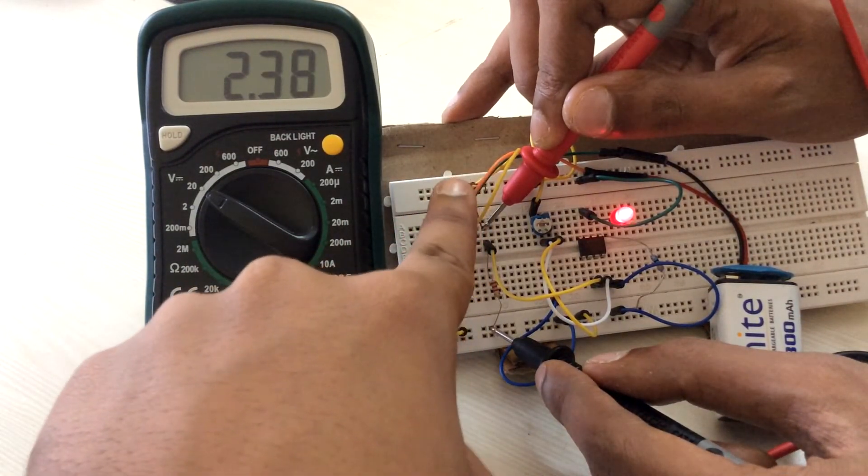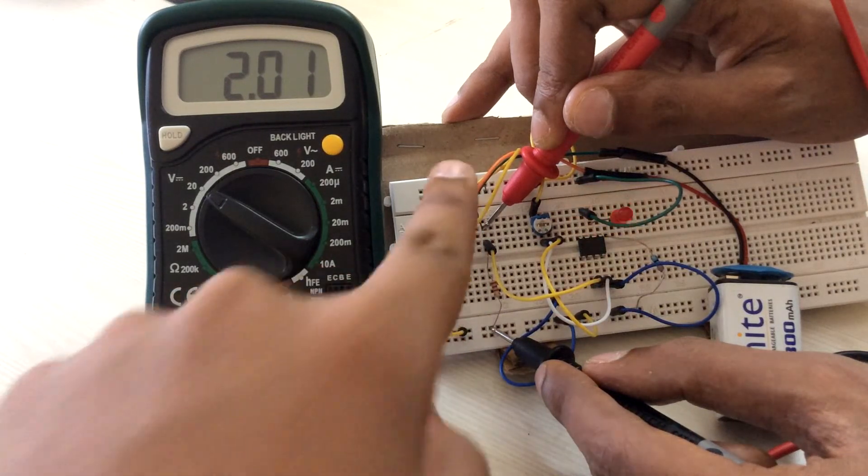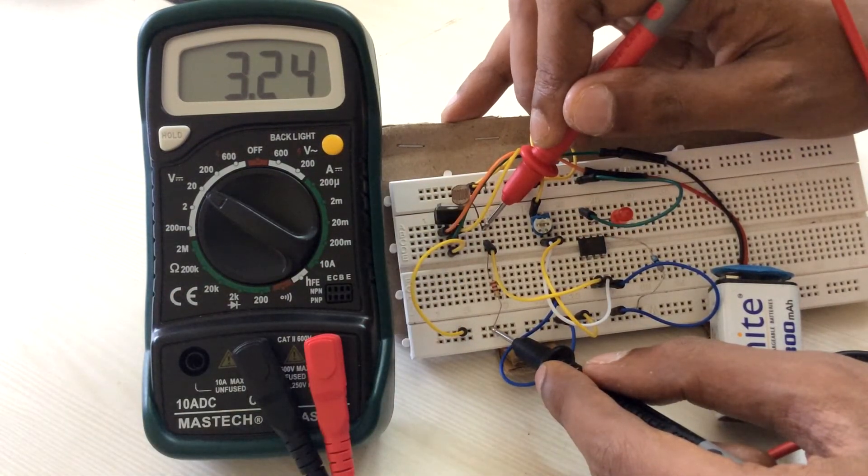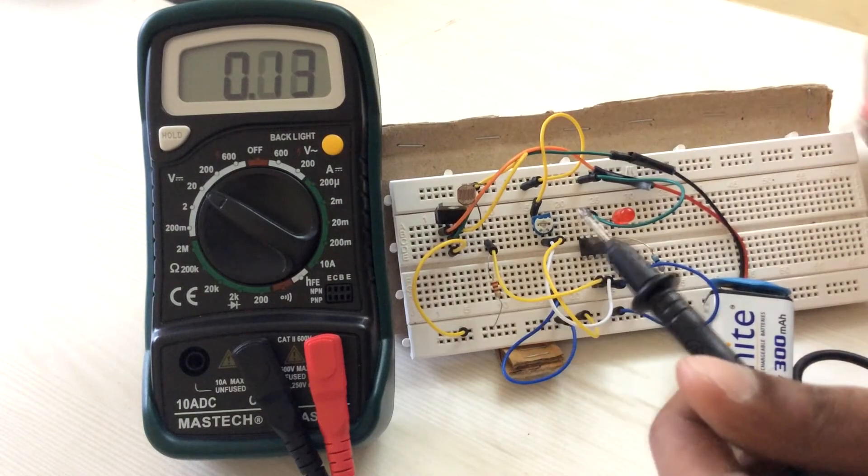If the voltage change is less, it's because you haven't chosen the right value of the resistor. If there is no voltage change, the LDR is not working.